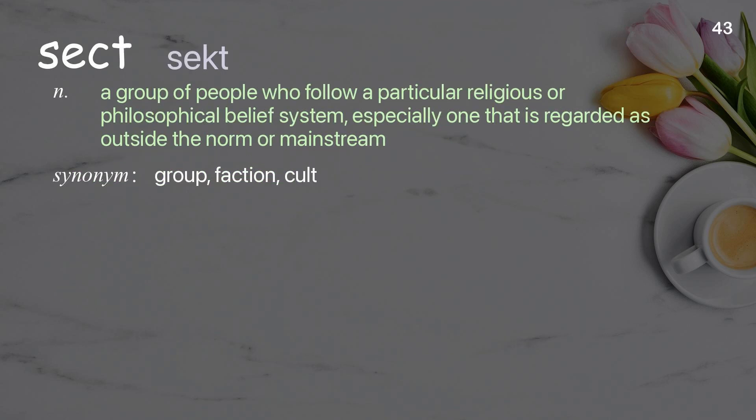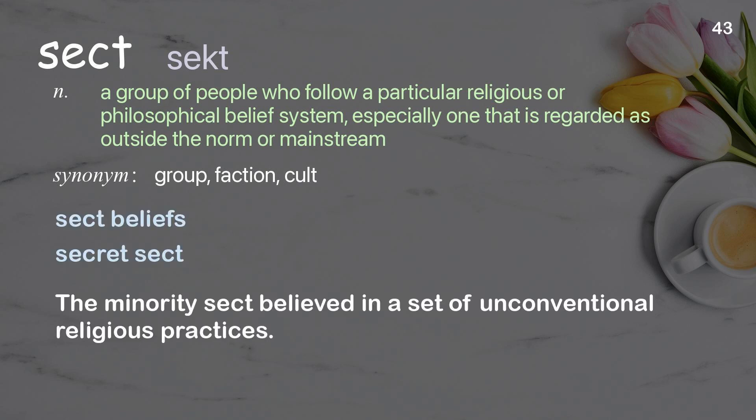Sect: a group of people who follow a particular religious or philosophical belief system, especially one that is regarded as outside the norm or mainstream. Examples: sect beliefs; secret sect. The minority sect believed in a set of unconventional religious practices.